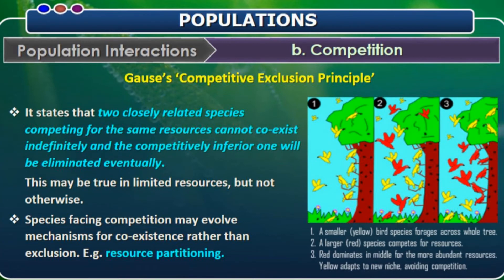The next concept is Gause's competitive exclusion principle. It states that two closely related species always compete for the same natural resource and cannot coexist equally. Out of this competition, the inferior one will be eliminated in due course of time due to the limitation of natural resources. Species facing competition may evolve mechanisms of co-existence rather than resource partitioning, as they cannot live together for longer durations.